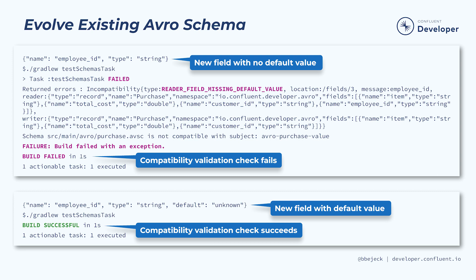And finally, you'll register the new schema version using Gradle and confirm in the Confluent Cloud UI that the registration succeeded. And when you're done, take a moment to feel proud of all that you learned throughout this course and the hard work you put in. I hope you join me again next time for another course.